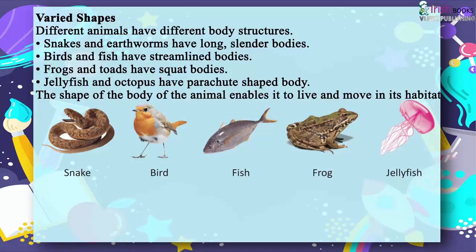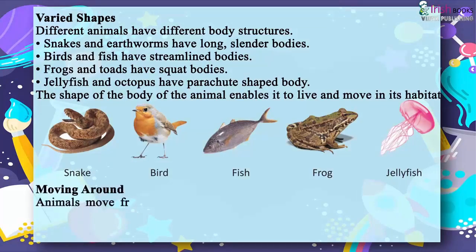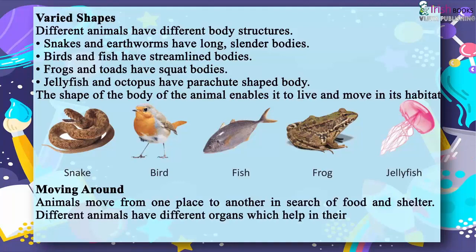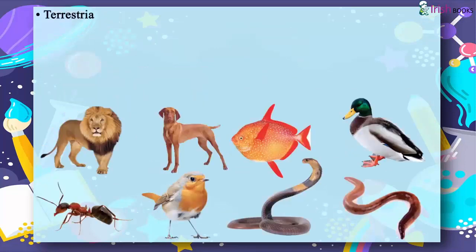Moving around. Animals move from one place to another in search of food and shelter. Different animals have different organs which help in their movements. Terrestrial animals walk and run with the help of four legs.